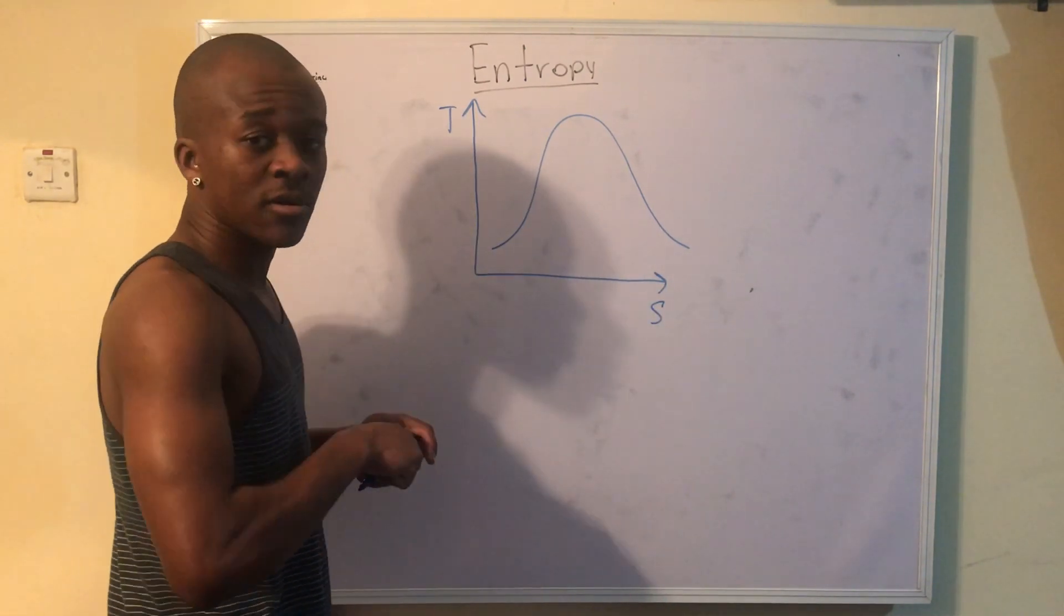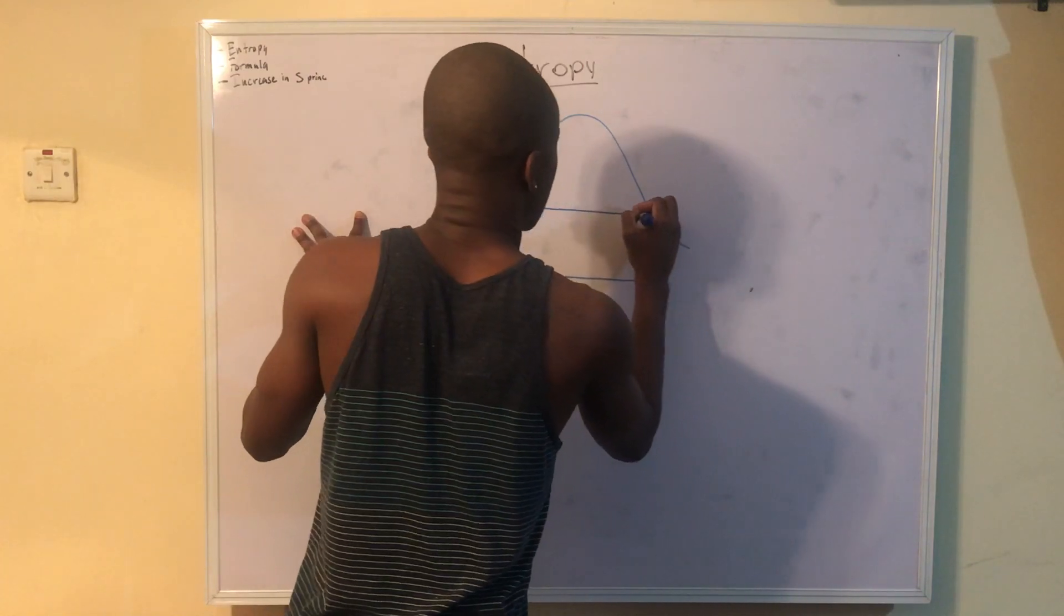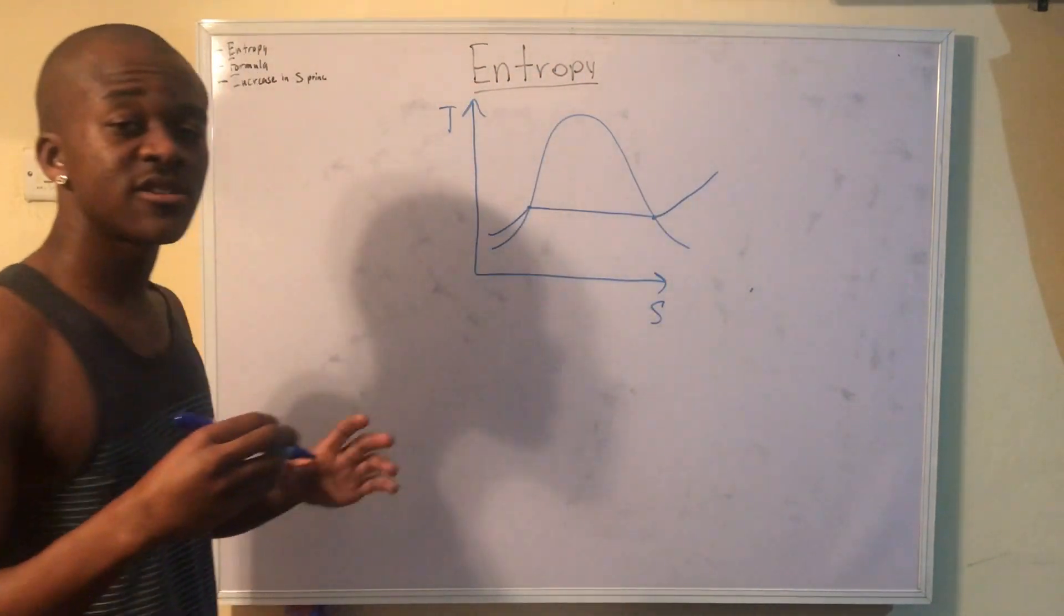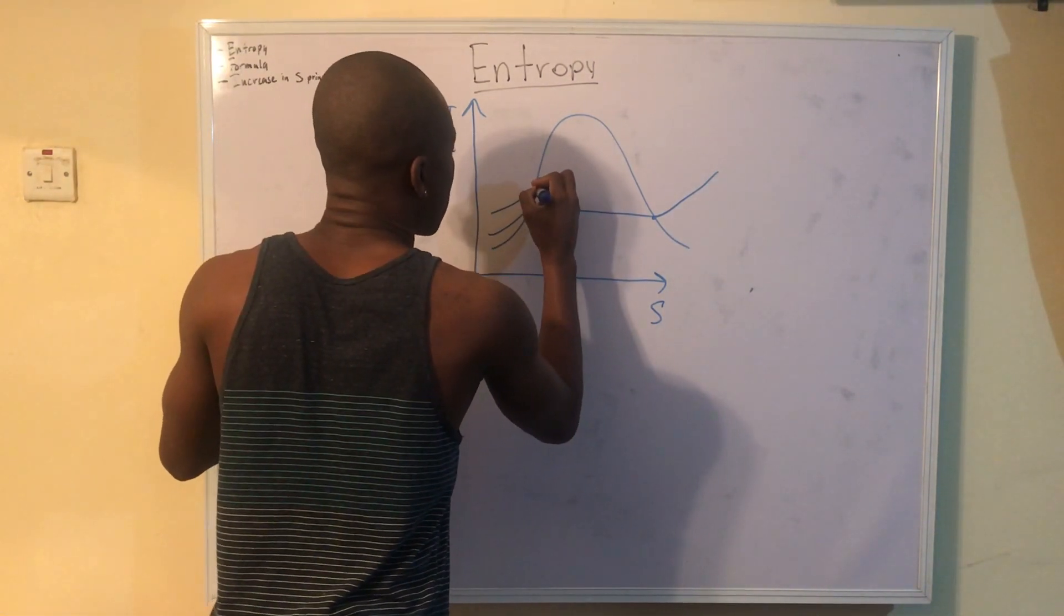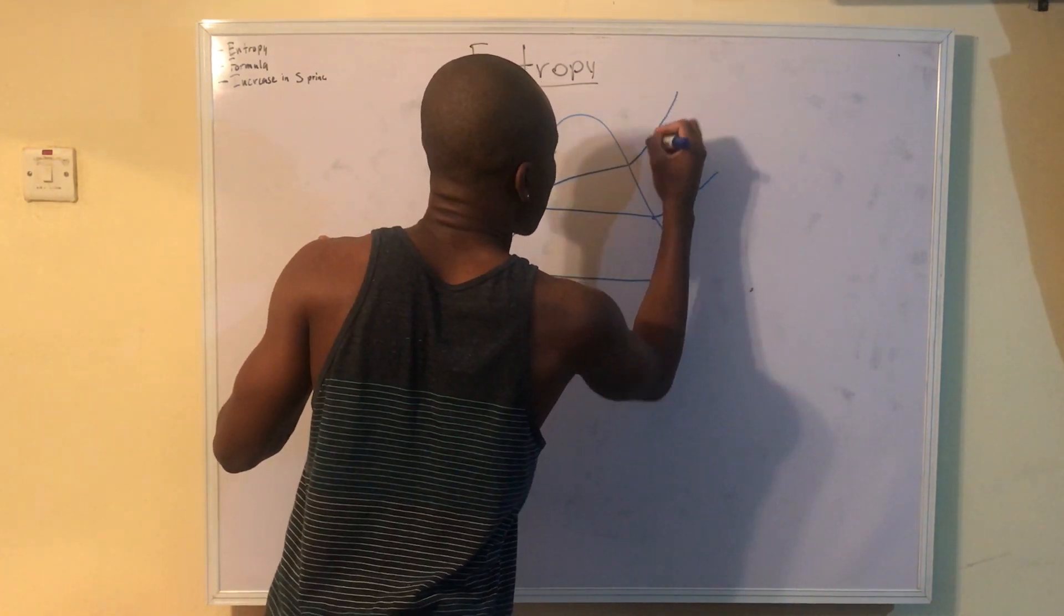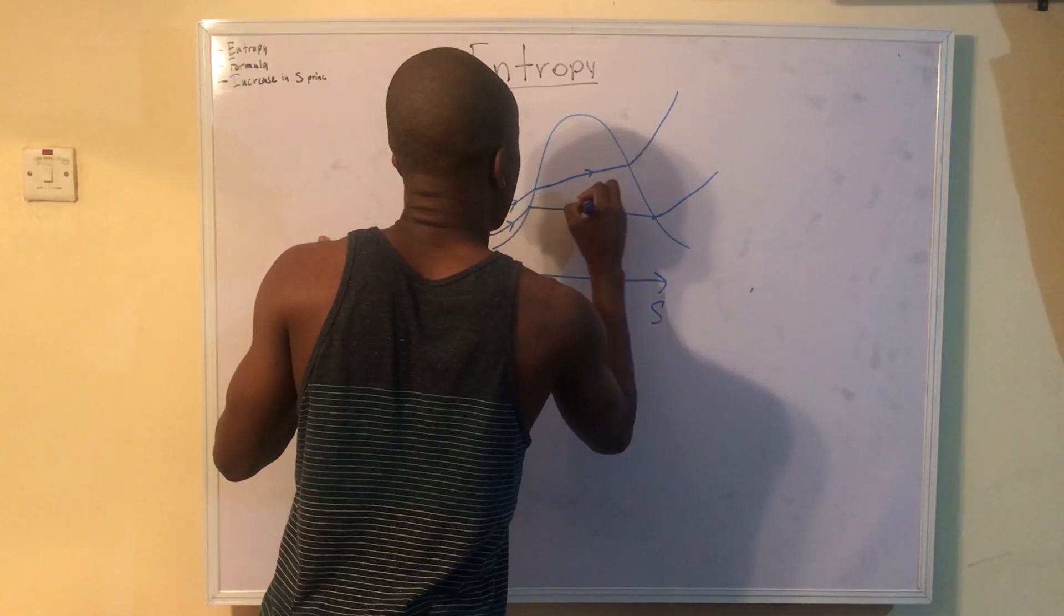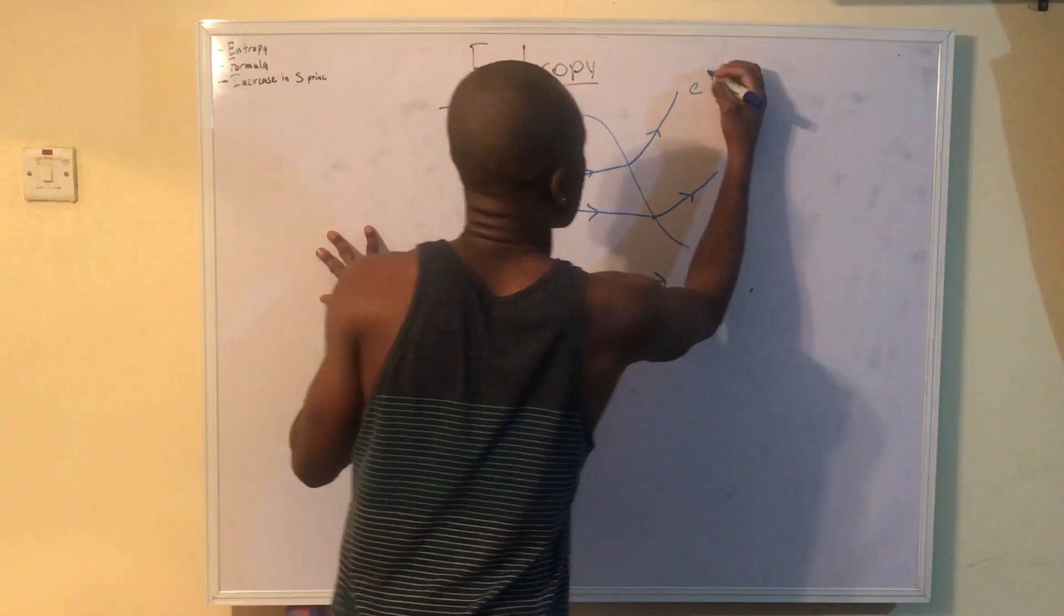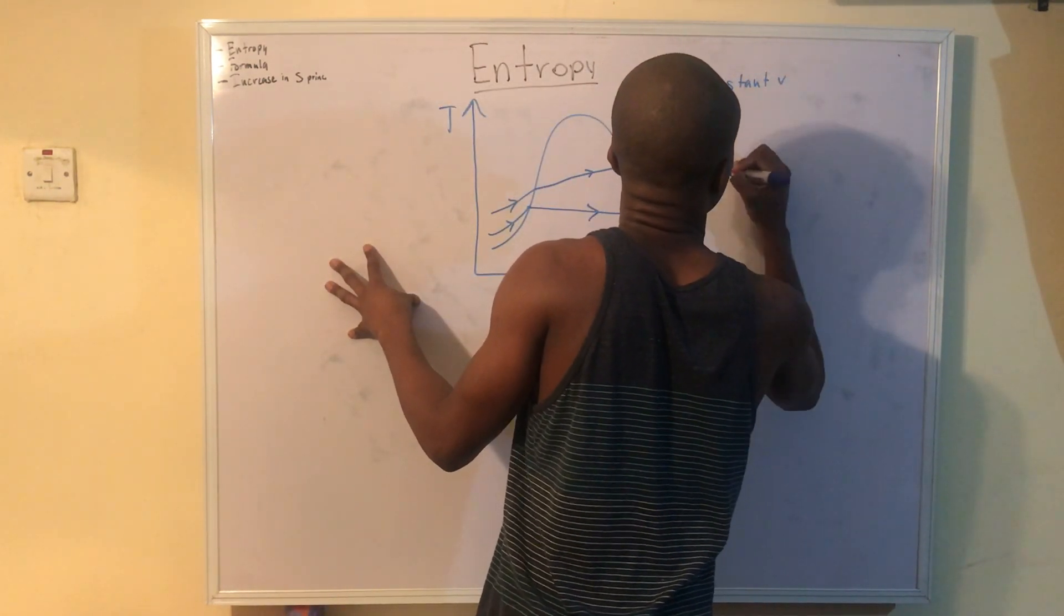And our constant pressure line basically looks the same, okay? So we have something that looks like this. However, our constant volume line sort of acts a little bit funny. We get something that looks like this, okay? With a constant volume line, it slants upward before slanting even more when we get outside of the dome. So this is constant V, constant P.